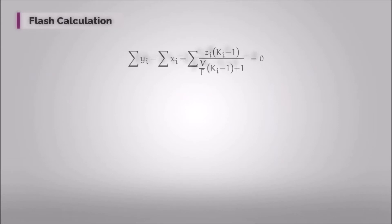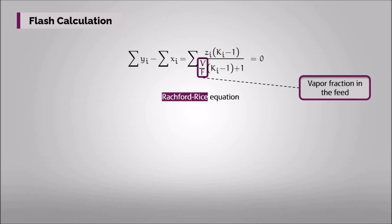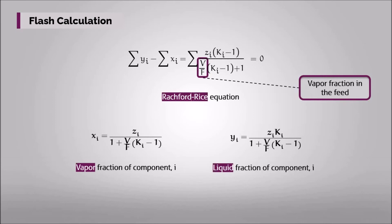This valuable equation is called Rachford-Rice equation, which provides the value of V over F, that is vapor fraction in the feed. So after having been found the V over F value, vapor and liquid fraction of each individual component can be figured out using the following equations.